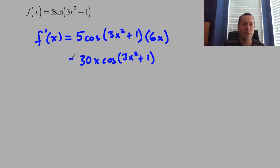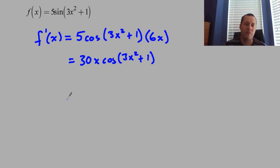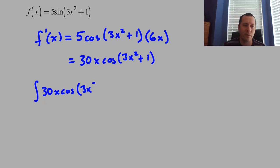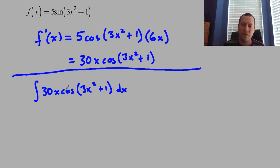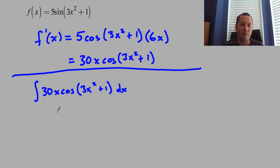That's the derivative, and we just did it, so we know what the antiderivative is—it's f(x). But suppose you were given this in an integral: the integral of 30x cosine of 3x² + 1 dx. The trick now is how do you do this process backwards when you haven't just seen it done forward? When you don't know where this started. How do you get to that antiderivative? This is the tricky part.